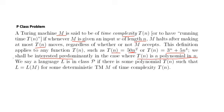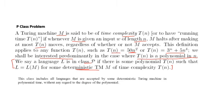We say a language L is in class P if there is some polynomial T(n) such that L equals the language accepted by Turing machine M, for some deterministic — and this is very important — deterministic Turing machine of time complexity T(n). Simply put, P is the class that includes all languages accepted by some deterministic Turing machine in polynomial time, without regard to the degree of the polynomial. So the degree can be 100, 1000, anything — N to the power of anything can belong to class P.